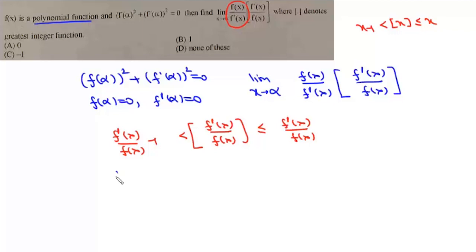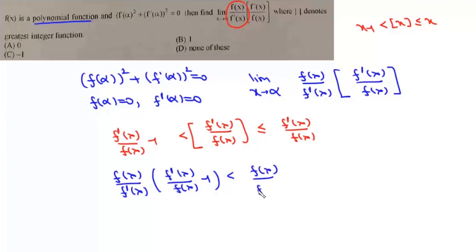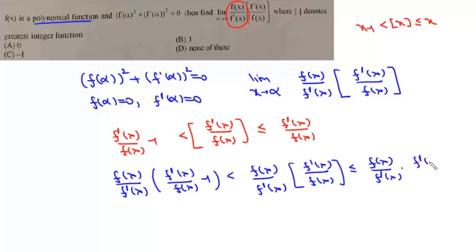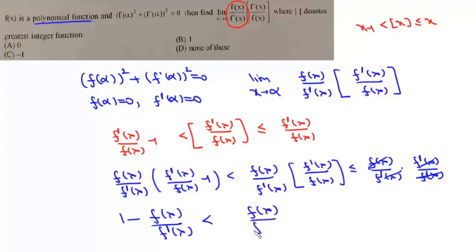Now we multiply everything by f(x)/f'(x). We get: f(x)/f'(x) · (f'(x)/f(x) − 1) is less than f(x)/f'(x) · ⌊f'(x)/f(x)⌋, which is less than or equal to f(x)/f'(x) · f'(x)/f(x). After cancellation, this simplifies to: 1 − f(x)/f'(x) is less than the expression, which is less than or equal to 1.